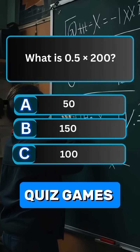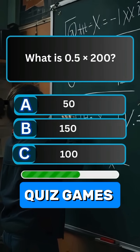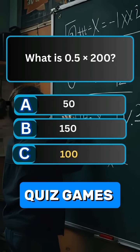Question 4. What is 0.5 multiplied by 200? Answer C. 100.